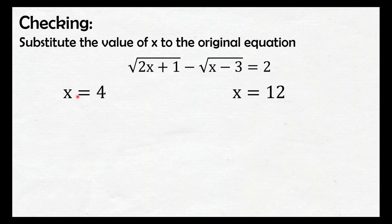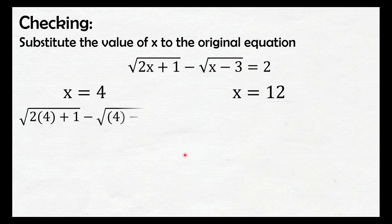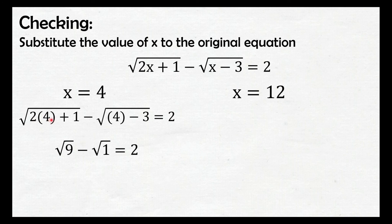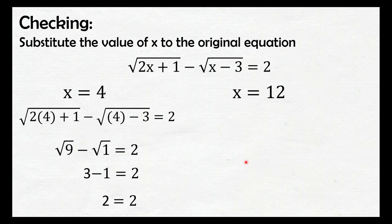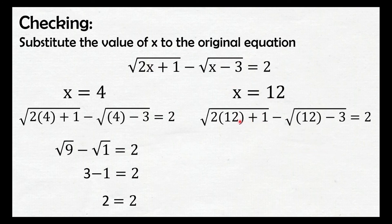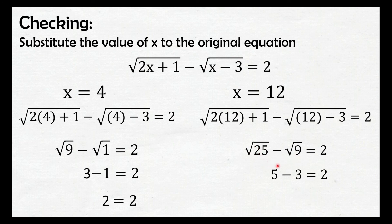I-check natin ngayon kung solutions ito doon sa original equation, o baka may makuha na naman tayong extraneous roots. For x equals 4: square root of 2 times 4 plus 1 minus square root of 4 minus 3 equals 2. 2 times 4 is 8 plus 1, that is 9; 4 minus 3, that is 1. Square root of 9 is 3, and square root of 1 is 1. 3 minus 1, that is 2. So, 2 equals 2 — si 4 ay solution doon sa original radical equation natin. For x equals 12: 2 times 12 is 24 plus 1, that is 25; 12 minus 3, that is 9. Square root of 25 is 5, and square root of 9 is 3. 5 minus 3, that is 2. So, equal pa rin siya — si 12 ay solution din doon sa original equation natin.